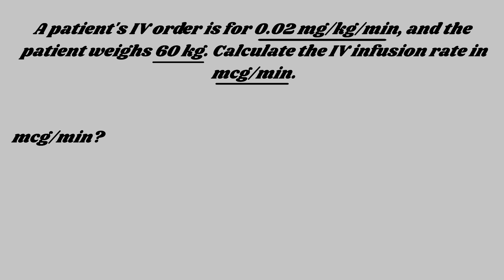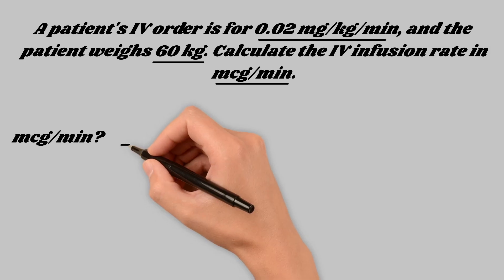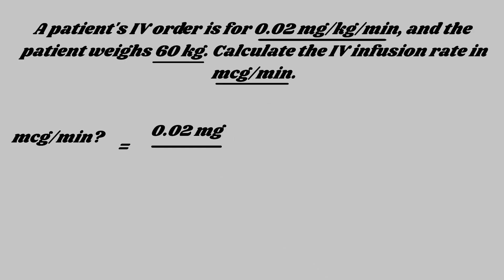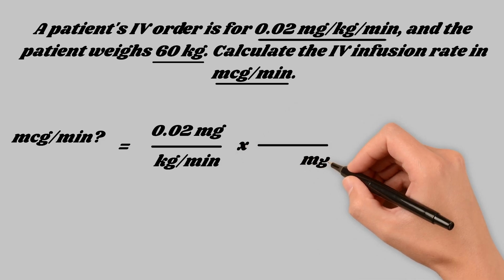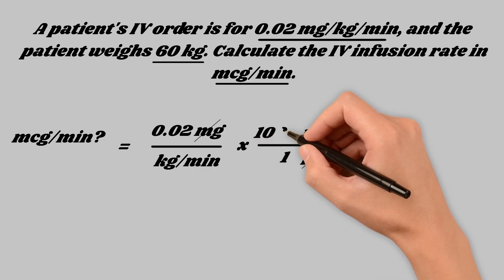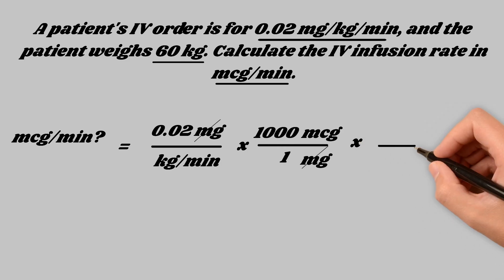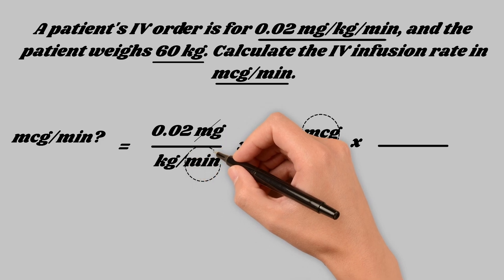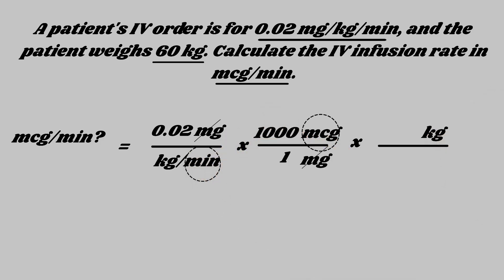What has milligrams that could potentially be micrograms to go on top? 0.02 mg — that gives us a starting number, and it also has kilograms per minute. We need to get rid of milligrams. Unlike previous questions where the unit to convert was in the denominator, this time it's in the numerator. Since milligrams are on top, to cancel them out you put milligrams on the bottom and micrograms on top. There are 1,000 micrograms in one milligram. Now we have kilograms left to cancel. The patient's weight is in kilograms, so since kilograms are on the bottom, we put 60 kilograms on top — canceling out kilograms — and we're only left with micrograms per minute.